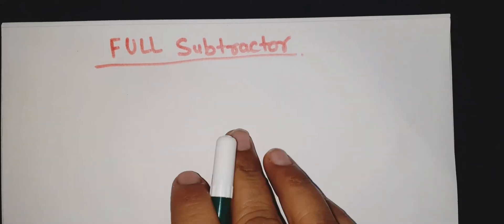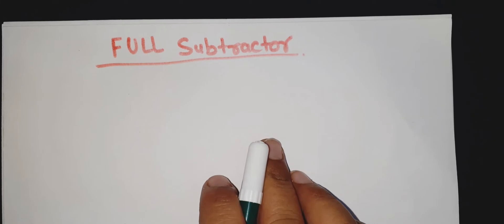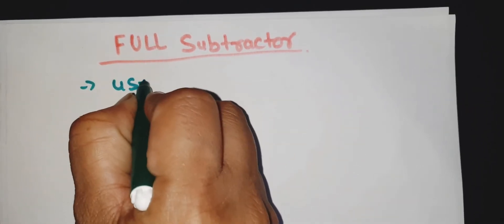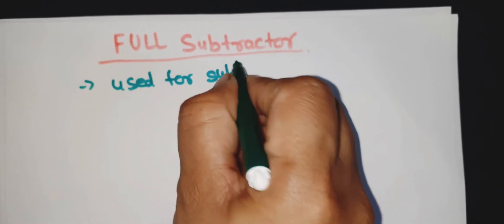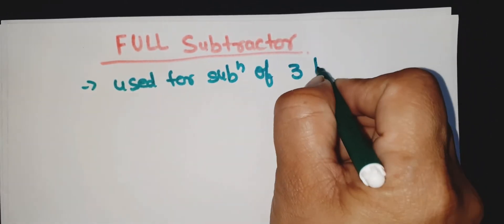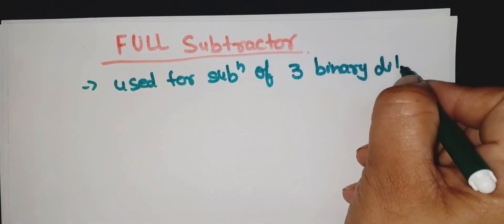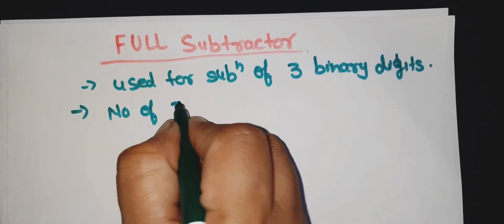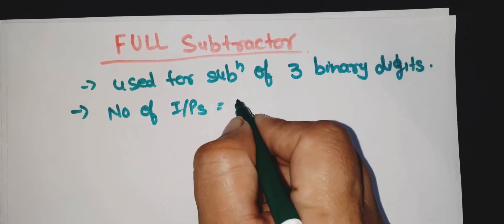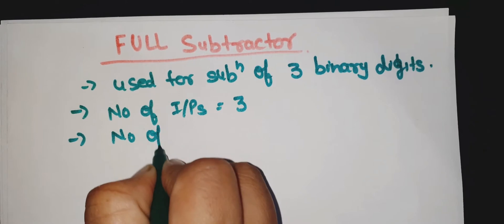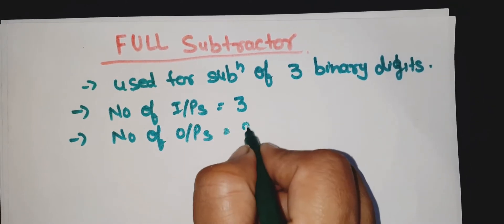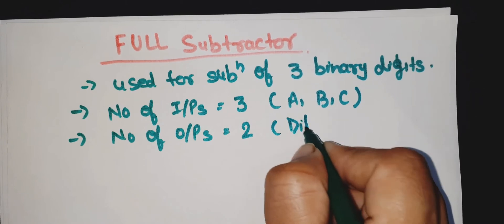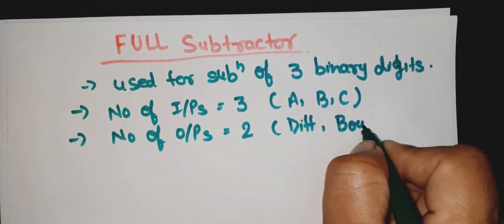A full subtractor is used for subtraction of three binary digits. Number of inputs is equal to three, number of outputs is two. The three inputs are A, B, C and the two outputs are difference and B_out.